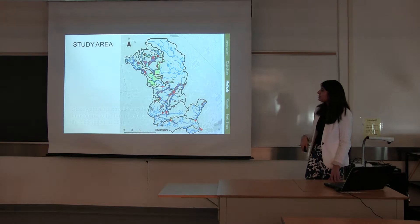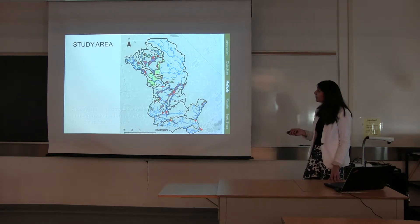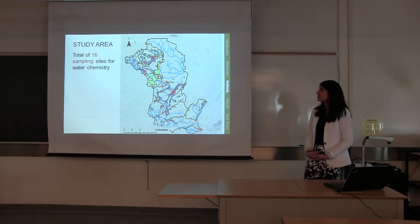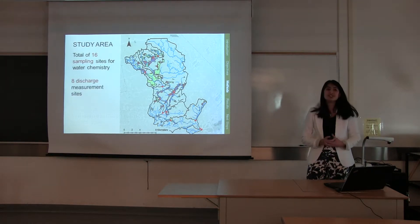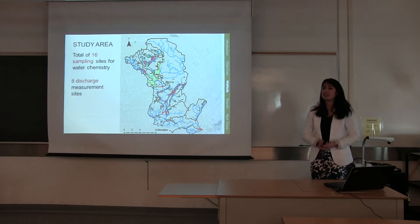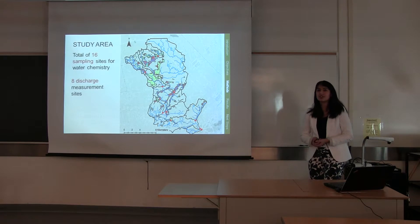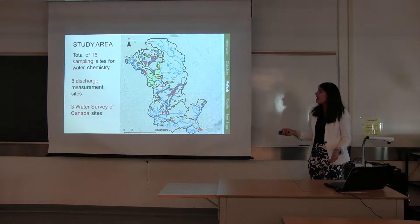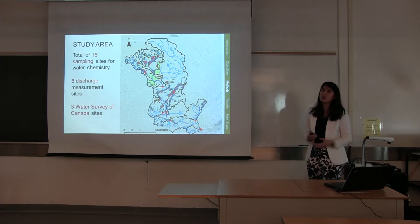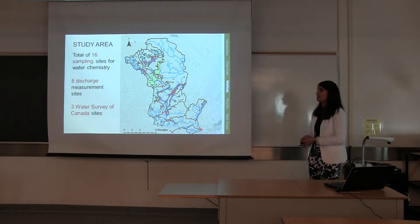The study area in Spencer Creek had a total of 16 sampling sites for water chemistry. Eight of these sites were used for discharge measurements, measuring continuous water stage or level throughout the summer. Three of these sites are Water Survey of Canada sites that had data readily available to download.